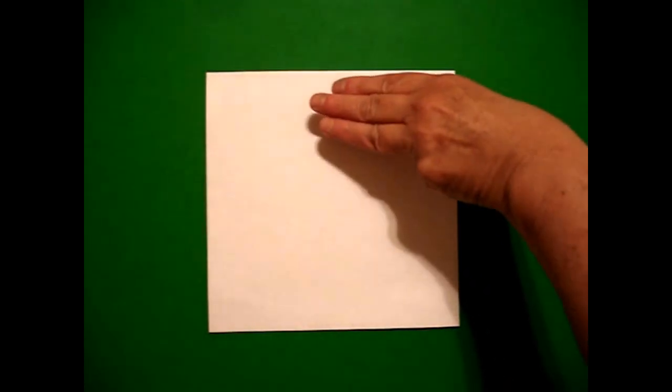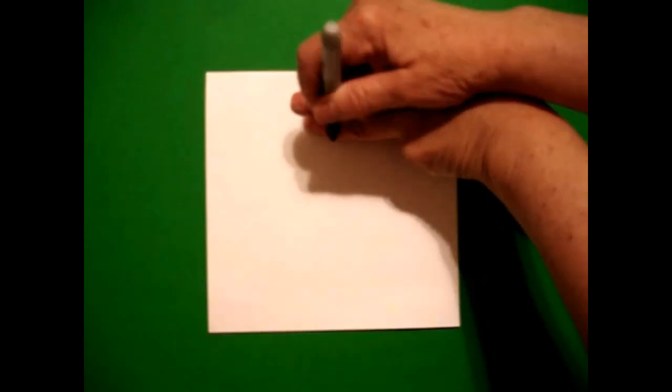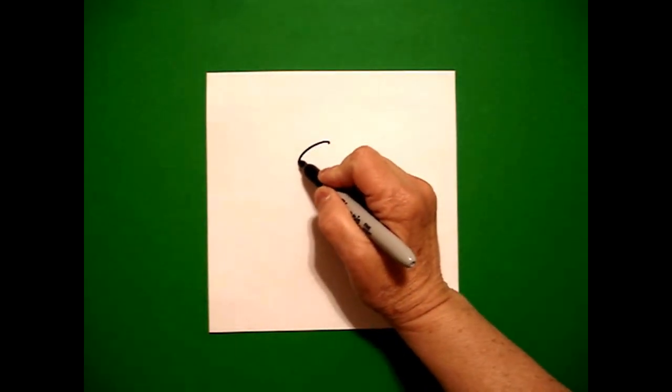Today's project is how to draw a bumblebee. I'm going to take three fingers from the top and right here in the middle I'm going to put a dot. And from that dot I'm going to draw an oval.